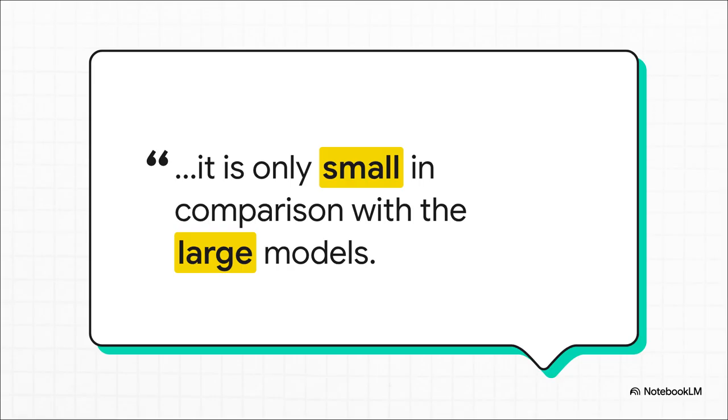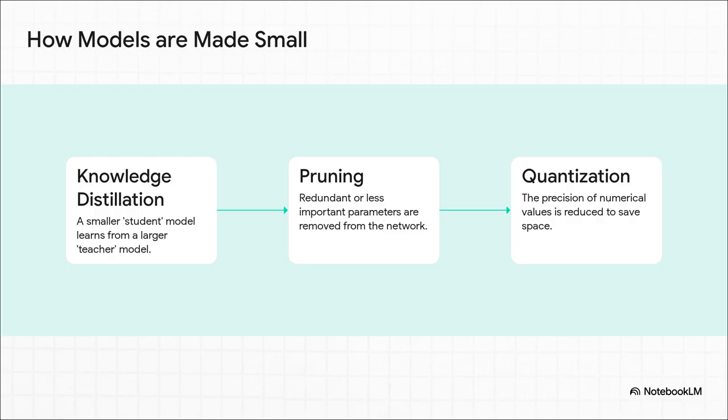So how in the world do you actually shrink an AI? Well, there are three main tricks. First up is something called knowledge distillation. Imagine a smaller student model learning directly from a bigger, smarter teacher model.